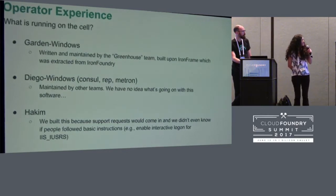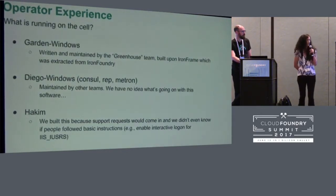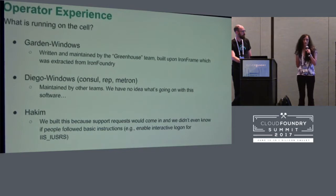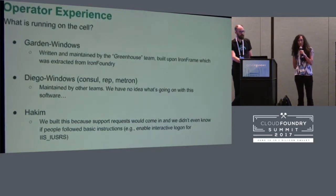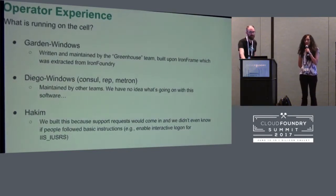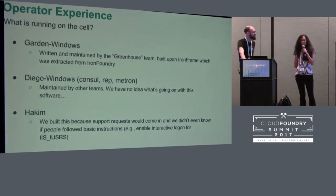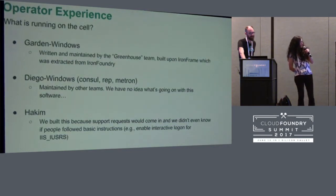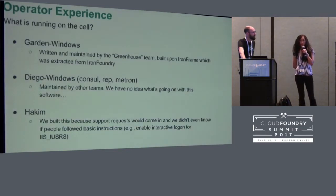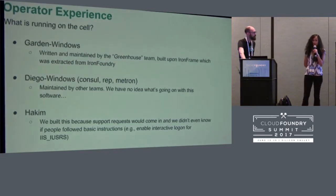Let's look at what is actually running on the cells. We have Garden Windows, which is the containerization technology, written and maintained by the Greenhouse team. We also have Diego Windows, comprised of three jobs: Console, Rep, and Metron. This was not written or maintained by our team, so we didn't have a lot of visibility into what could be going on with those jobs and how they might be changing. And finally we have Hakeem, which is not necessary for the cell to function in Diego, but something we wrote to help with troubleshooting and more easily pinpointing customer issues.